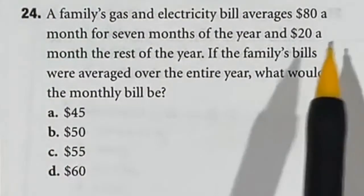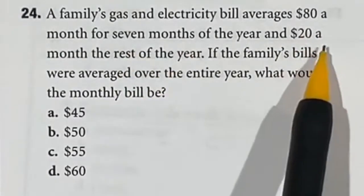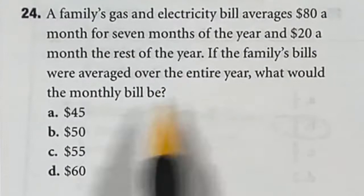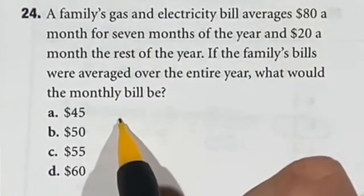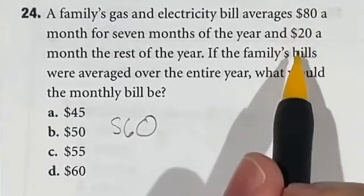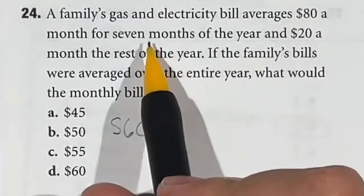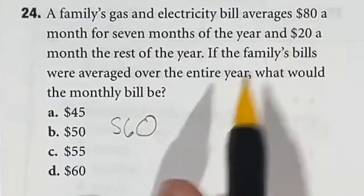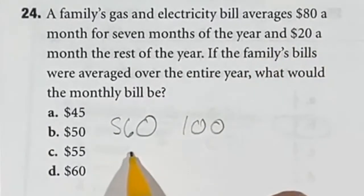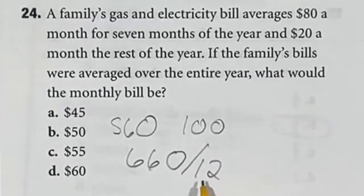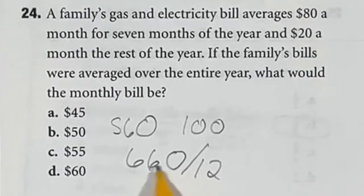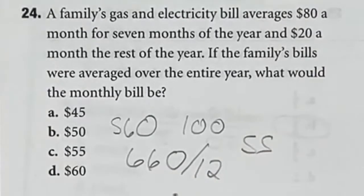Another averages question. They pay $80 a month for 7 of the months and $20 for the rest of the year. What's the overall average for each month? First, find the total money spent. 80 times 7 is 560. Then 20 times the remaining 5 months is 100. That means for the whole year it was $660. Dividing by 12: I know 12 times 50 is 600, leaving another 60. 12 goes into 60 five times, so that means it would be 55, which is answer C.